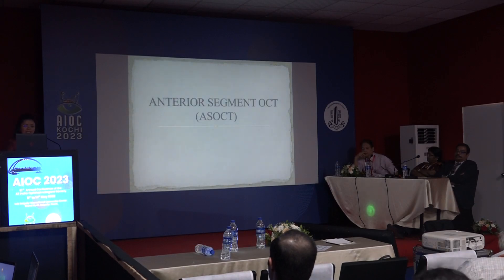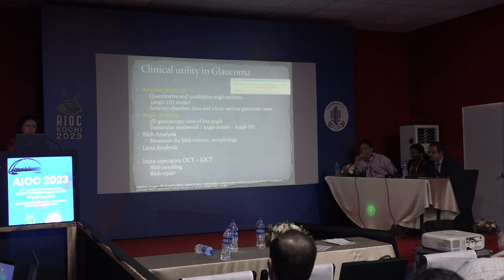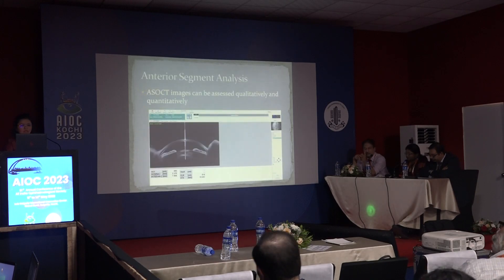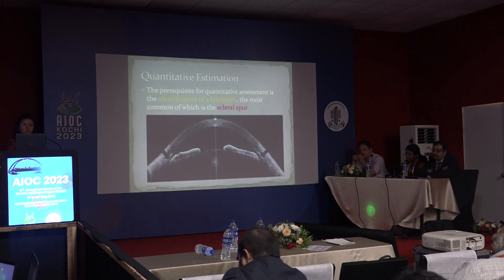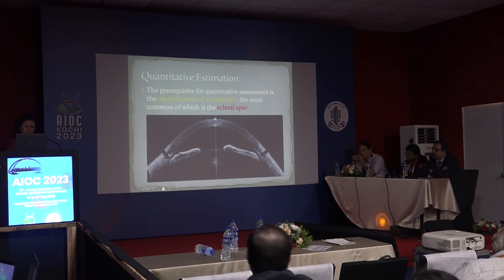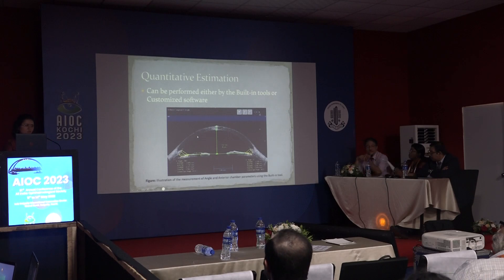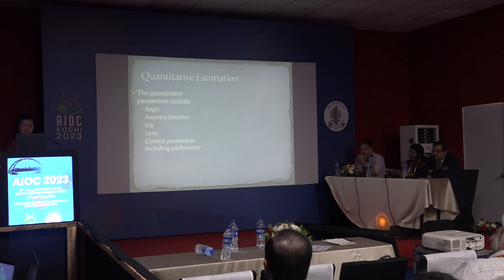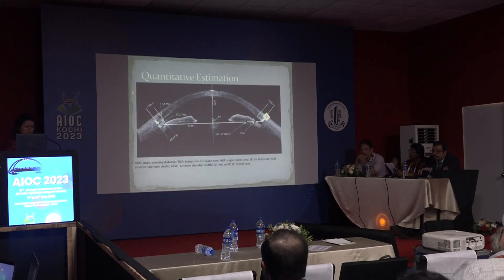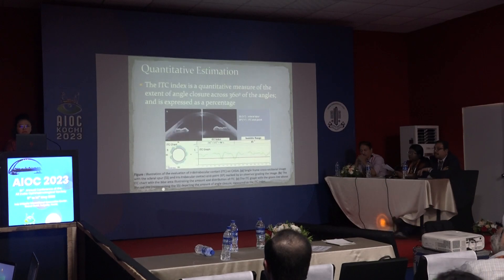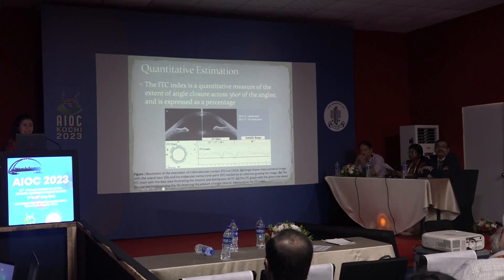The second part of this talk is on ASOCT. Focusing on anterior segment and angle analysis, ASOCT can be used both qualitatively and quantitatively. The most important landmark is the scleral spur, seen as a bump in the inner wall of the sclera. Once the scleral spur is marked, the software automatically calculates all angle parameters such as AOD and other trabecular iris space measurements — these are built-in tools.